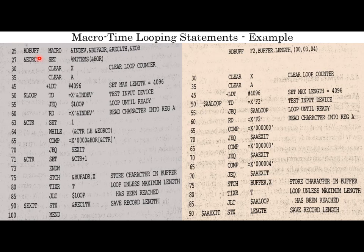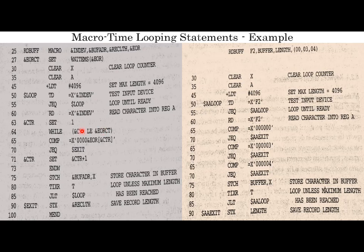URCT is set as 3 because there are three elements in the list. 'Clear x' and 'clear a' are copied, and plus LDT 4096 is copied. TD X ampersand indv — indv is f2, so line 50 gets f2. JE cube dollar a loop and RD equal to X ampersand indv — in place of indv we have f2. CTR is a macro time variable set as 1. The while condition is: CTR less than or equal to URCT, which is 3.